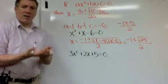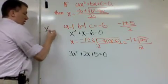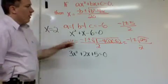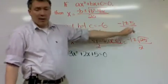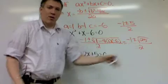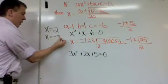Negative 1 plus 5 is 4. 4 over 2 is 2. So there's one answer. Negative 1 minus 5 is negative 6. Negative 6 over 2 is negative 3. There's my other answer.